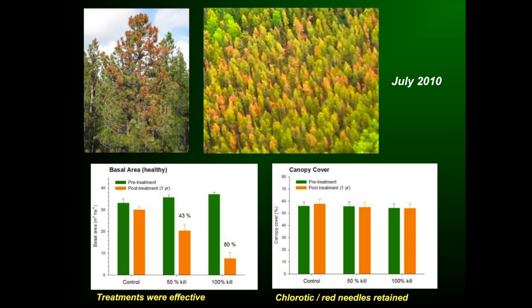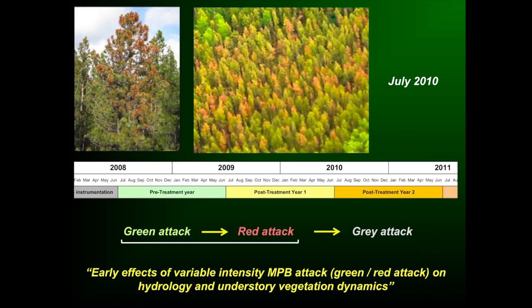The needles were retained, just as we would expect in the case of mountain pine beetle red attack. Looking at canopy cover from hemispherical photography, there has been no reduction in leaf area in the crown one year after the treatments, though needles have slowly started to fall on some trees since that time. What that means is our results — the hydrology work and the understory work — really reflect the red attack phase, not the grey attack phase.